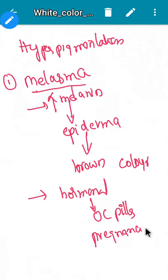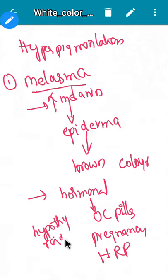Pregnancy, hormonal replacement therapy. It can also be associated with hypothyroidism. When there is excessive exposure to ultraviolet rays, we will see melasma. The etiology includes OC pills, pregnancy, hormonal replacement therapy, hypothyroidism, and ultraviolet B ray exposure.